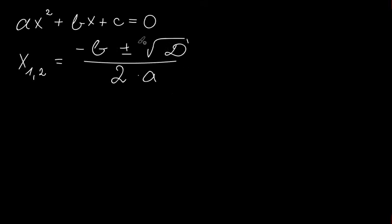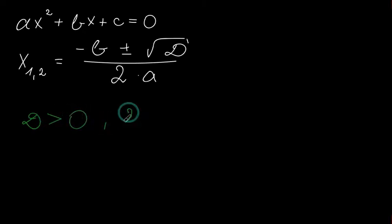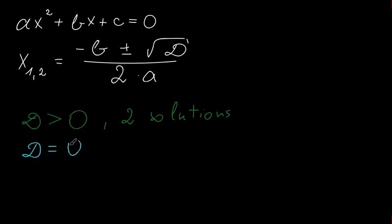If our discriminant is equal to zero we will have only one solution, but if it's more than zero we will have two solutions. Let me write that down. If the discriminant is greater than zero, we have two solutions. If our discriminant is equal to zero, we have only one solution.